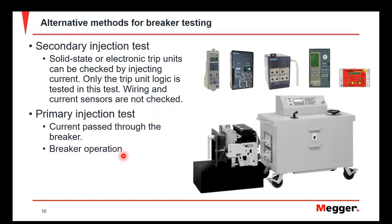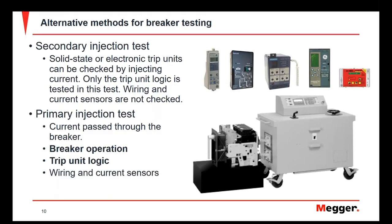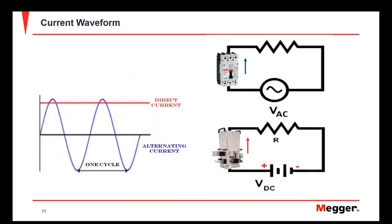Whenever we do a primary current injection test, we're testing for the breaker's overall operation, as well as checking the logic of the trip unit to make sure it's communicating properly with the other elements of the breaker, such as the current sensors and wiring associated with the trip unit. In other words, primary current injection is a complete system test to verify reliable operation whenever it needs to operate.